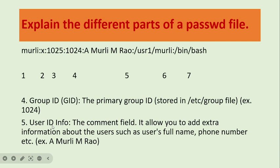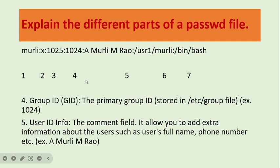Next is field 5: User ID info. The user ID information — such as full name and phone number — is stored here. As you can see, the example shows 'A.M. RAU'. This is a comment field that allows you to add extra information about the user, such as the user's full name, phone number, etc.